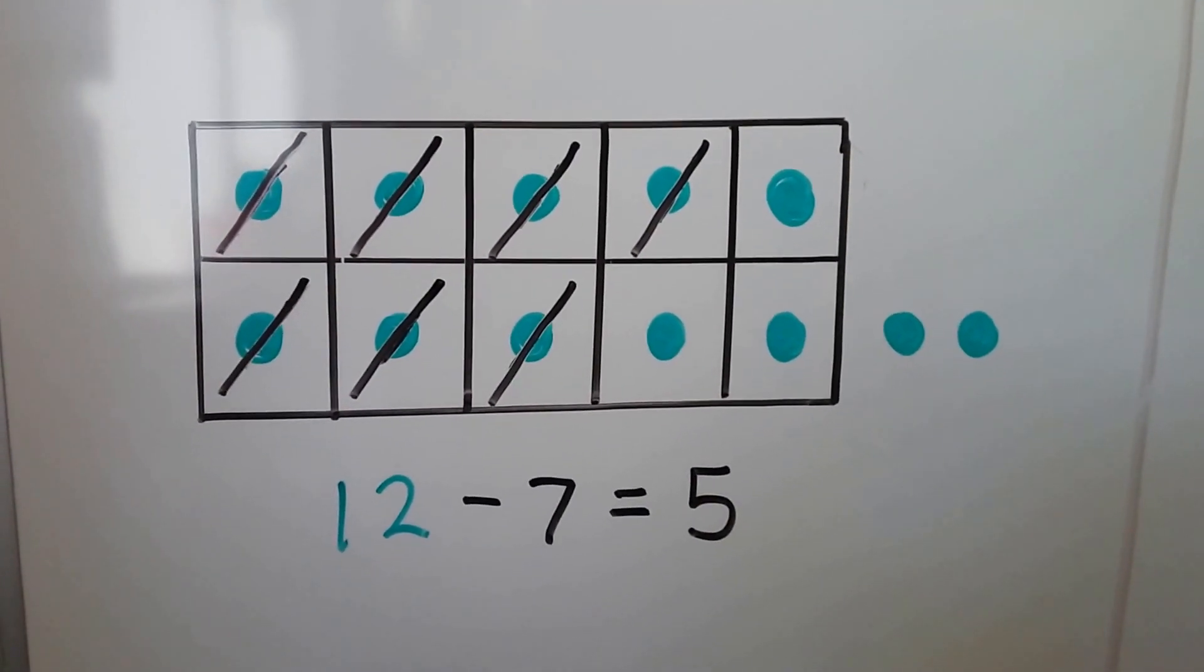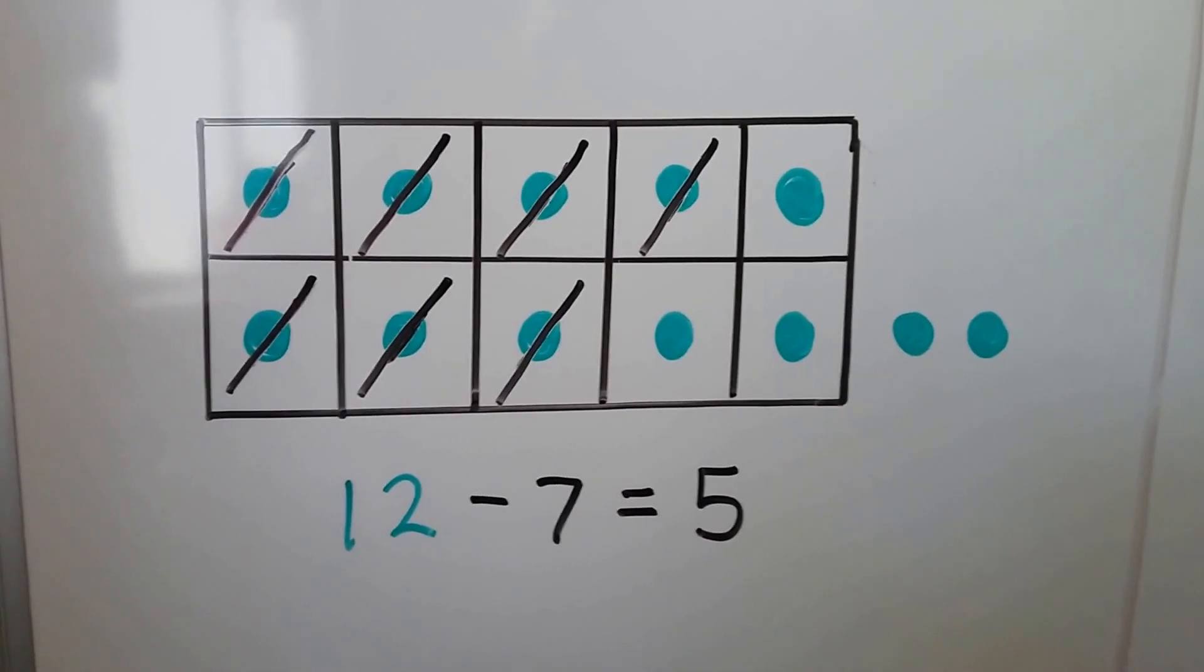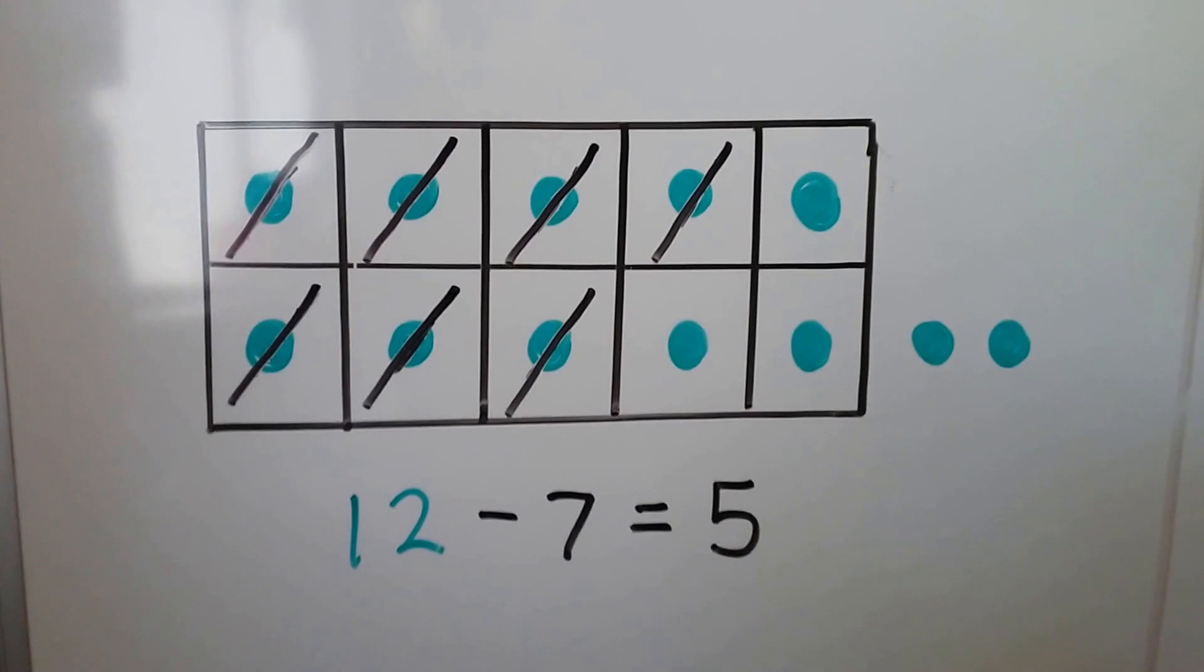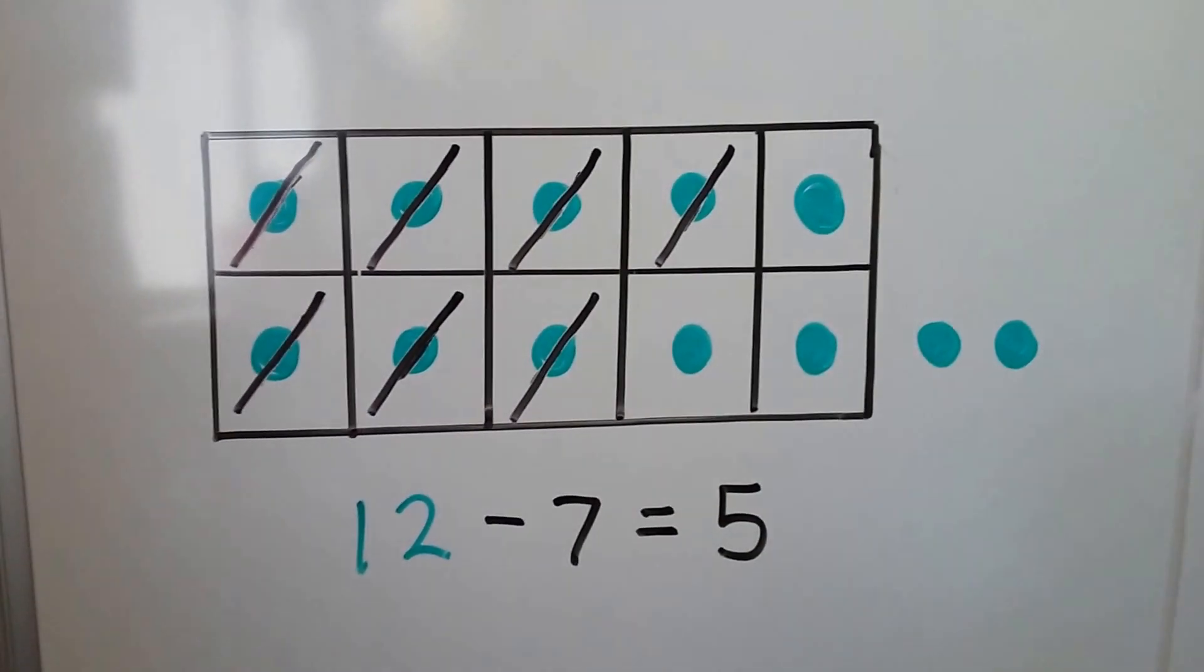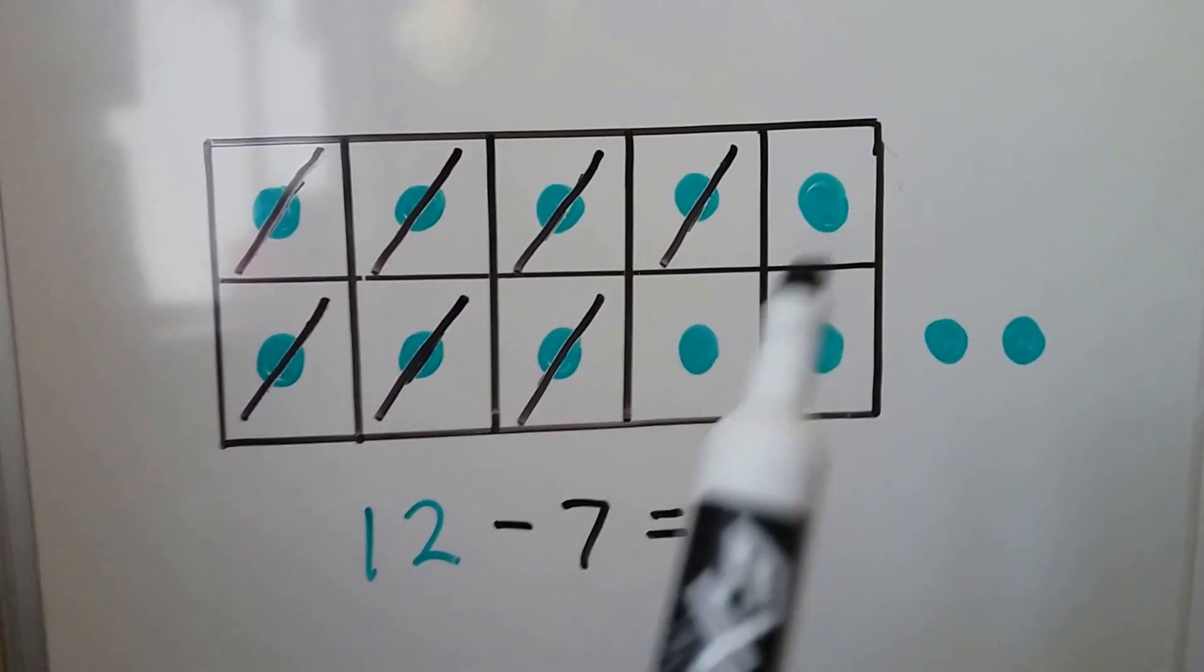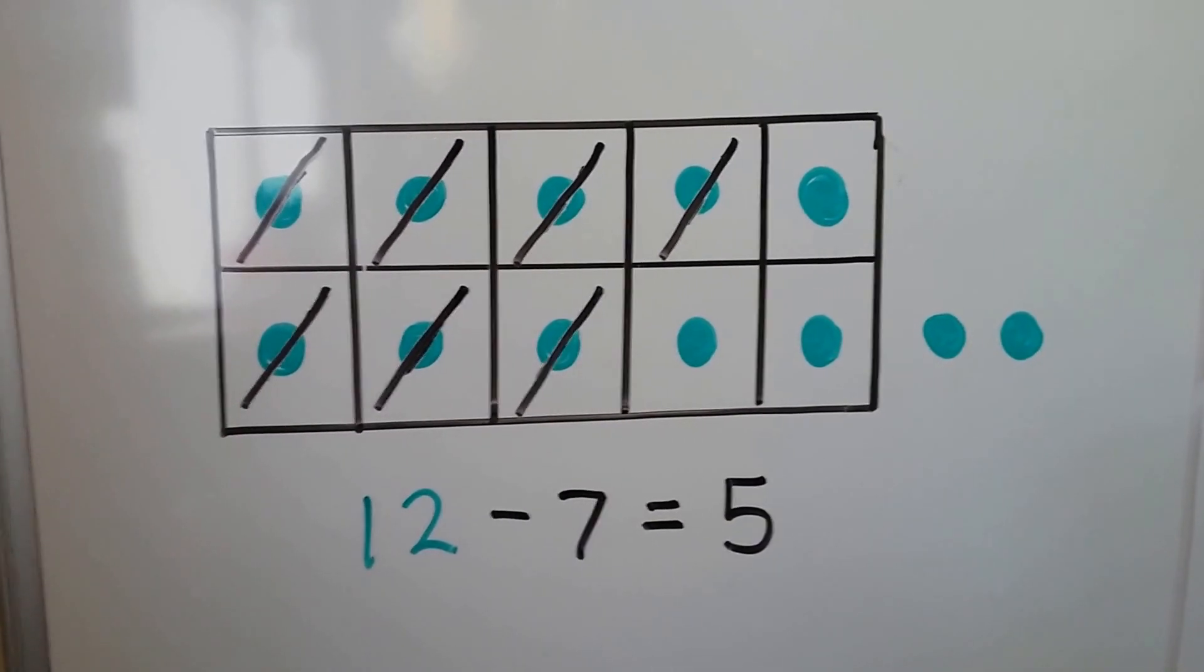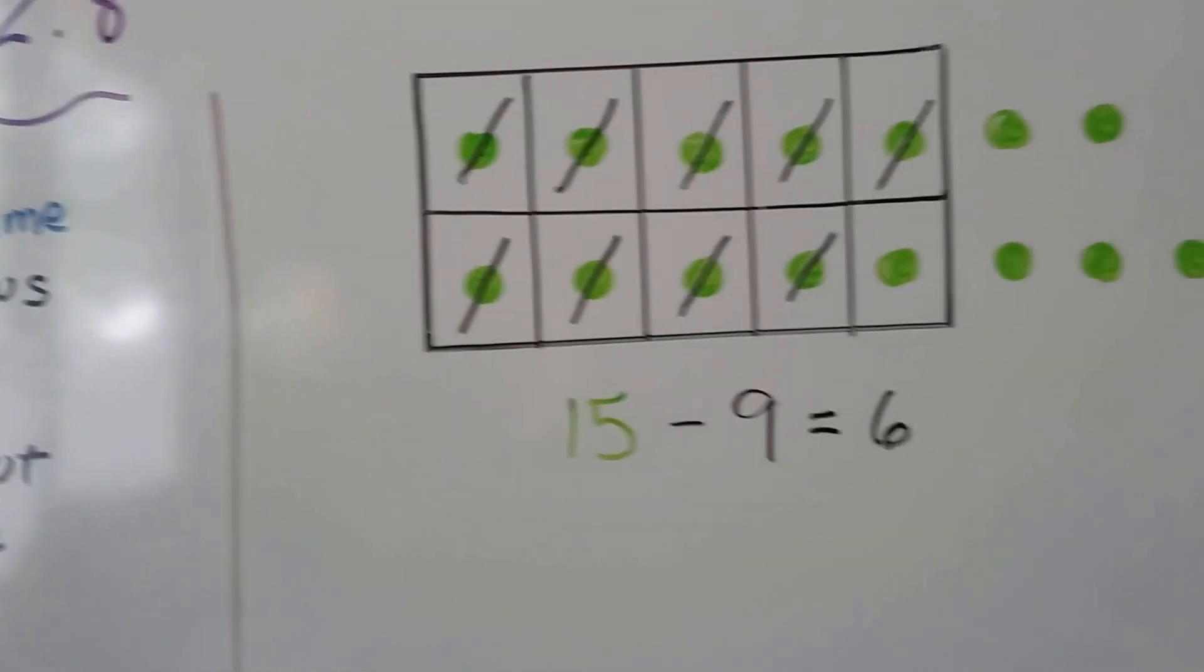12 green counters. We need to subtract 7, so we cross out 7 or remove 7, and we count how many are left over: 1, 2, 3, 4, 5. 12 minus 7 equals 5.